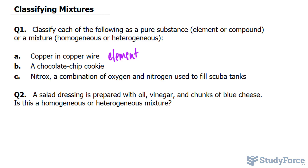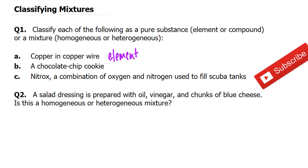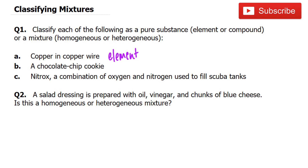Finally, in question C, nitrox — a combination of oxygen and nitrogen used to fill scuba tanks. When you go scuba diving, your tank consists of gases you would find in the atmosphere. For example, you'll find nitrogen gas, oxygen gas, and so on. You might think this consists of elements and compounds and classify it as a pure substance, but that's not the case. We have a mixture of gases, and it is a homogeneous mixture because the gases have a uniform composition — always the same percentage everywhere, approximately 78% nitrogen to 22% oxygen. So this is a mixture, but a homogeneous one.